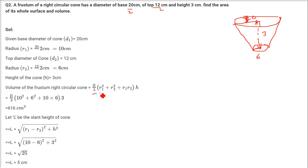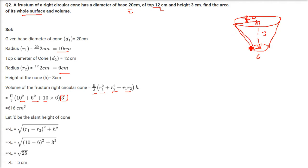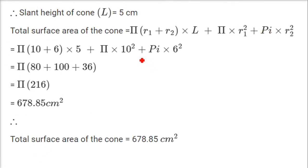Volume of the frustum = π/3 × (r1² + r2² + r1·r2) × h = π/3 × (10² + 6² + 10×6) × 3. To find the total surface area we need the slant height: L = √[(r1 − r2)² + h²] = √[(10 − 6)² + 3²] = √25 = 5.